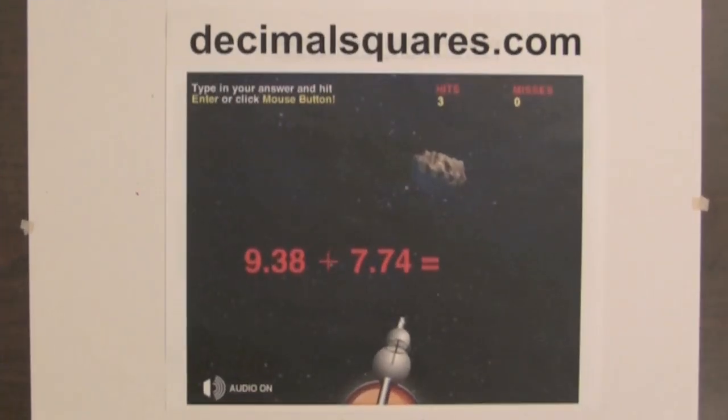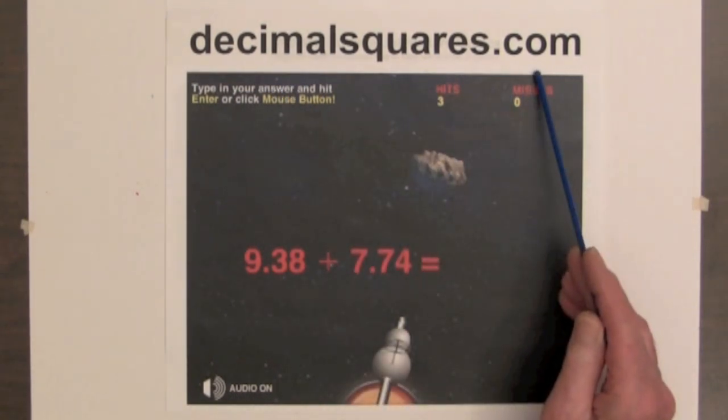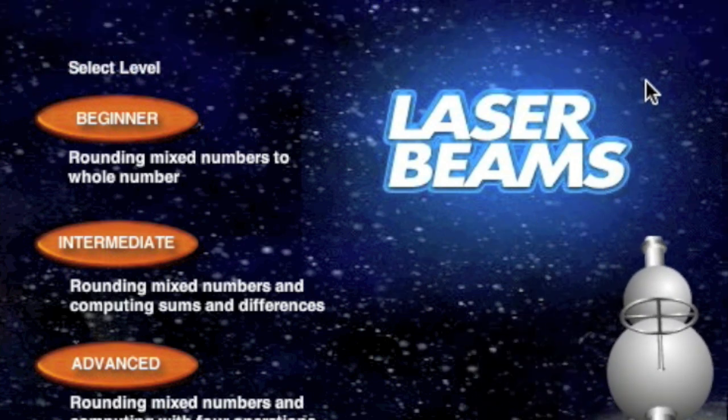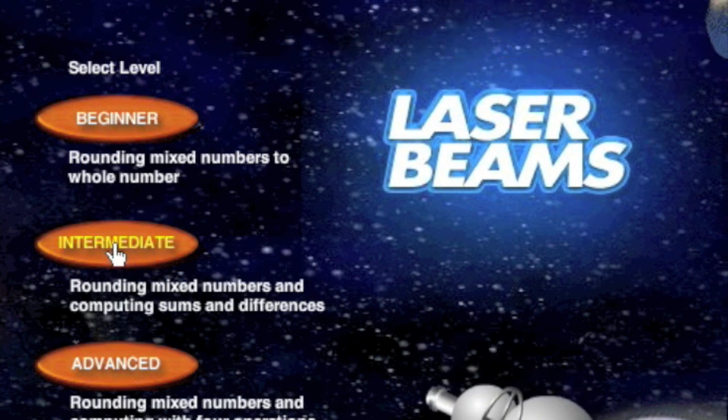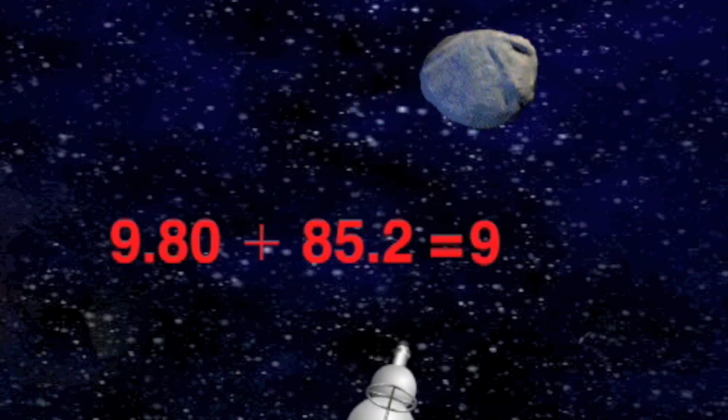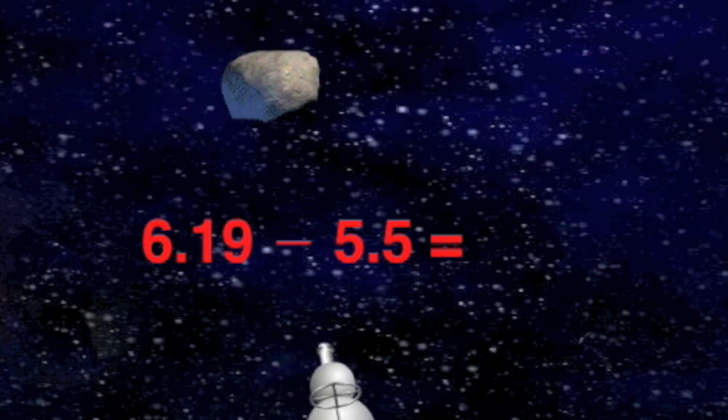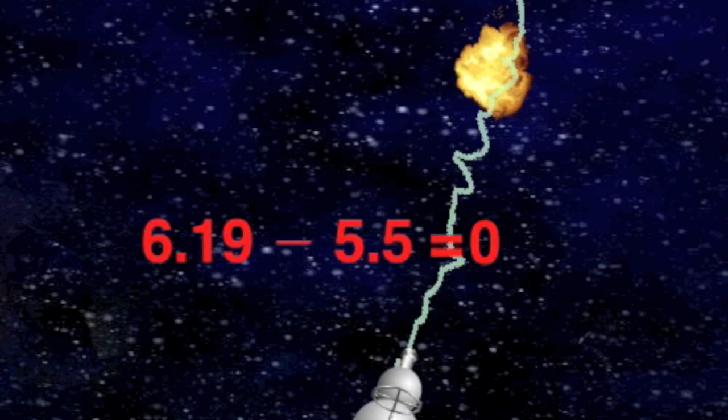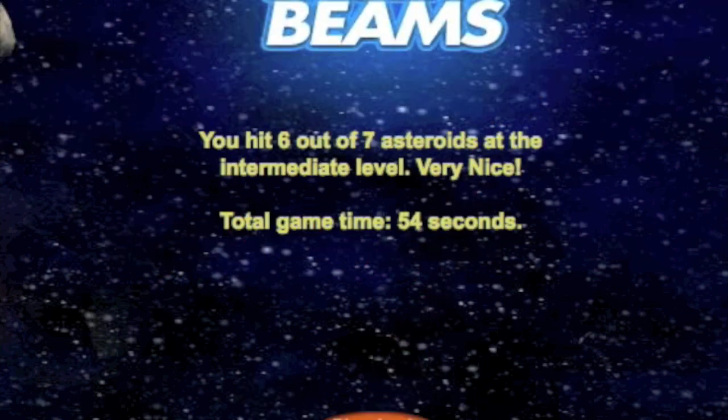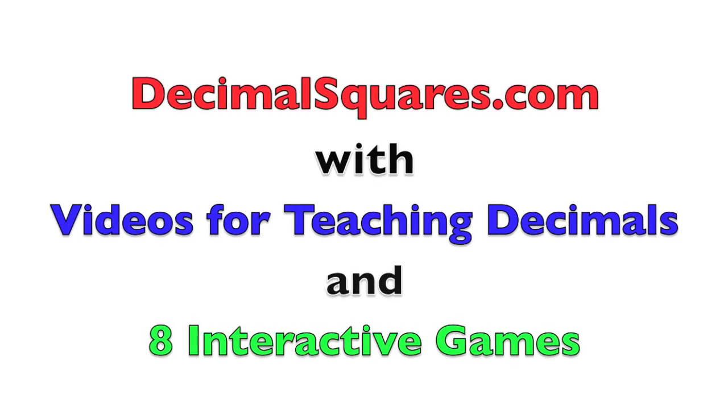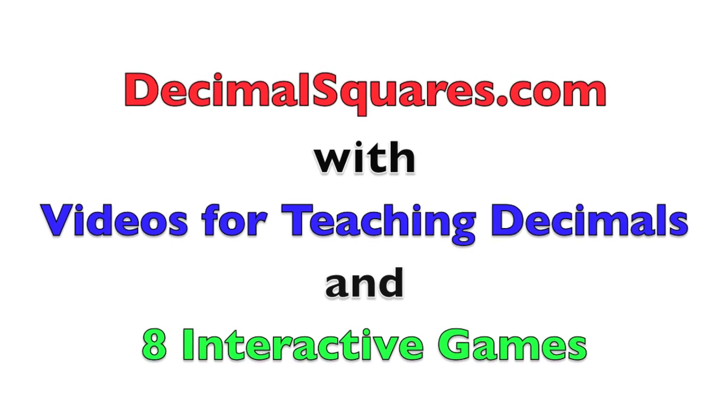A demonstration of a game shooting laser beams at asteroids from DecimalSquares.com. The object of this game is to shoot laser beams at asteroids. We'll choose the intermediate level which involves ranking decimals and computing sums and differences. Nice shot. This takes some concentration. Here we have a difference. Good shot. Six out of seven successful shots. I'll see you next time.